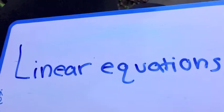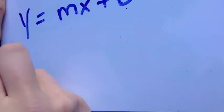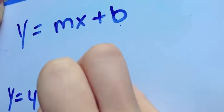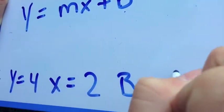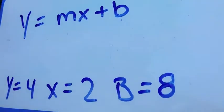What happens if you're given b and x and y? Good! Here's an example. y will equal 4, x is equal to 2, and b is equal to 8. So you're looking for the slope here. Exactly! m is slope.